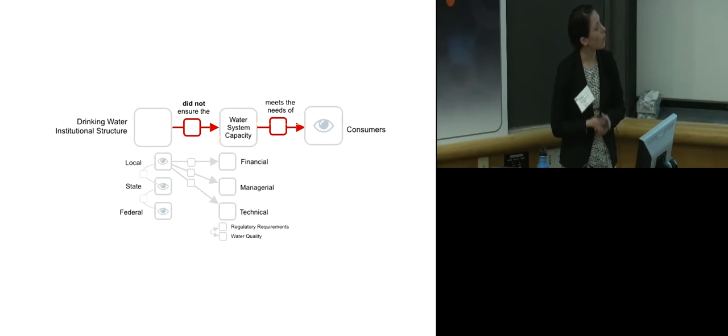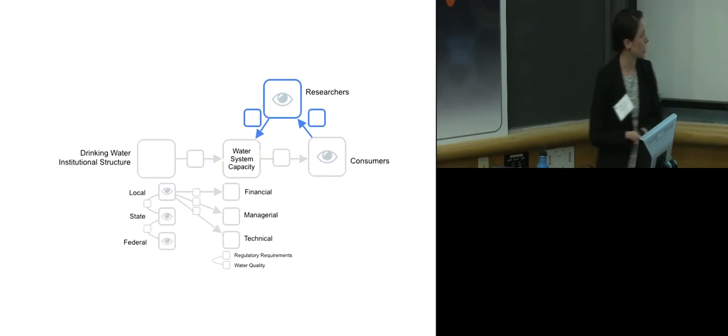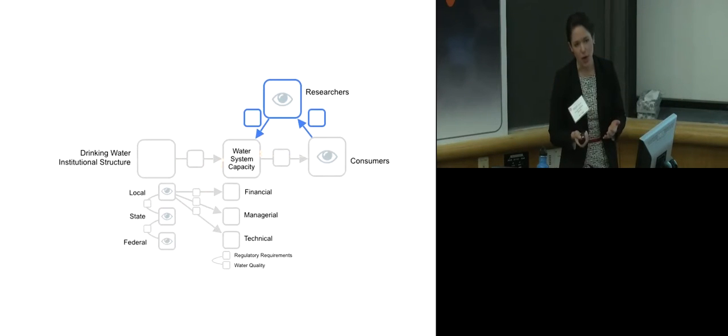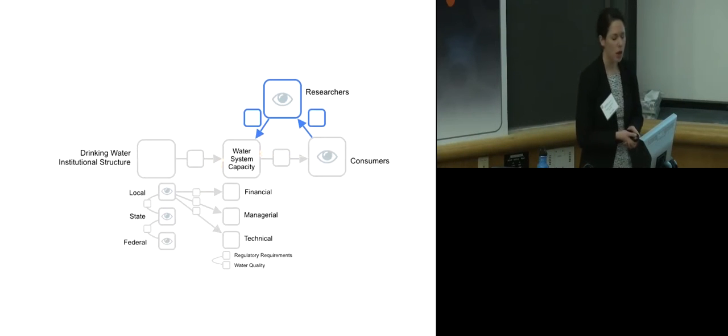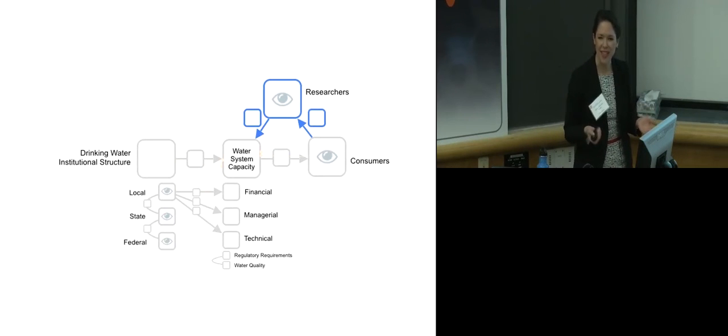So researchers stepped in from Virginia Tech and local medical institutions to bring light to the crisis and resolve the water system capacity. Now, the Flint's water is safe and they're getting their water from Detroit. And so after mapping this, I had a better understanding of the complex problem, but I still could not understand how the state and local officials let this continue for more than a year. What was this critical point of failure?